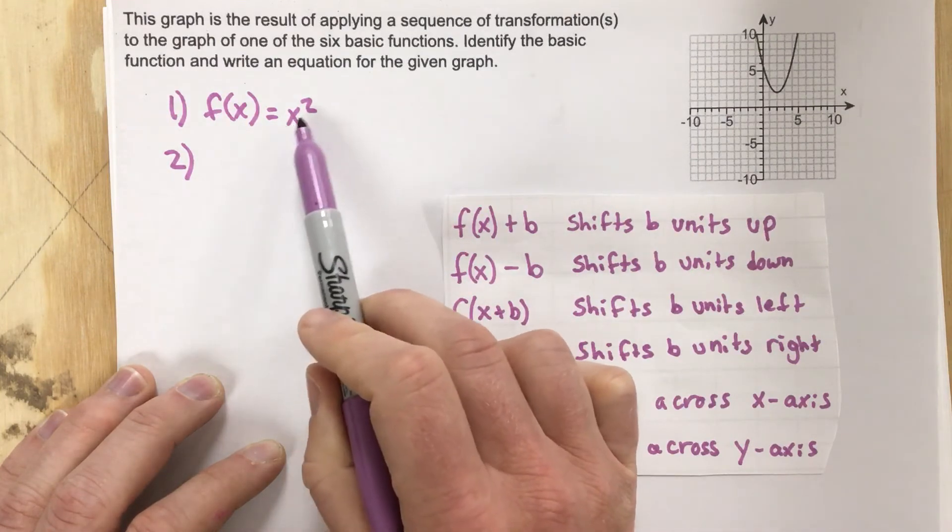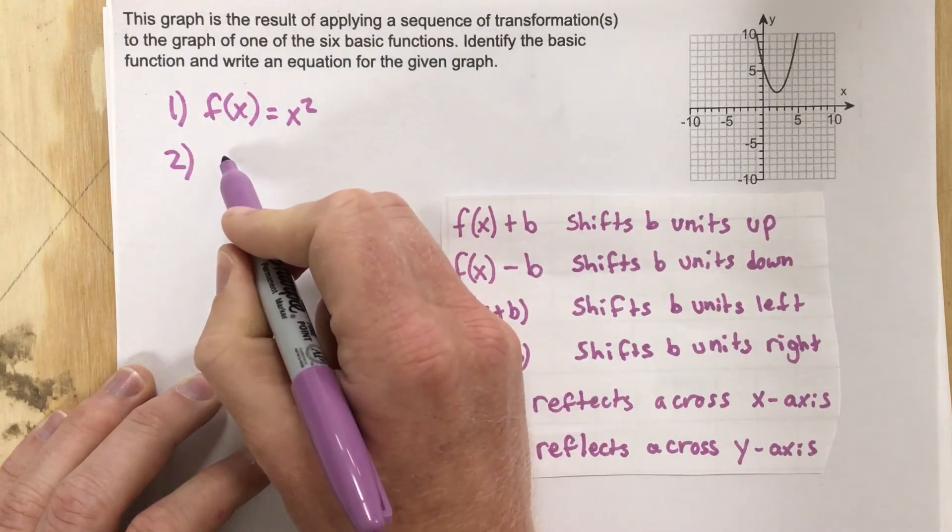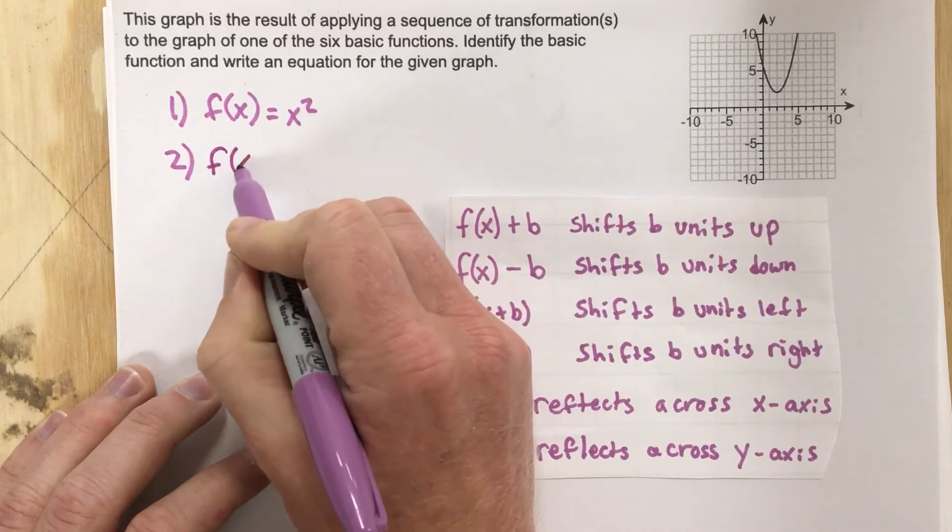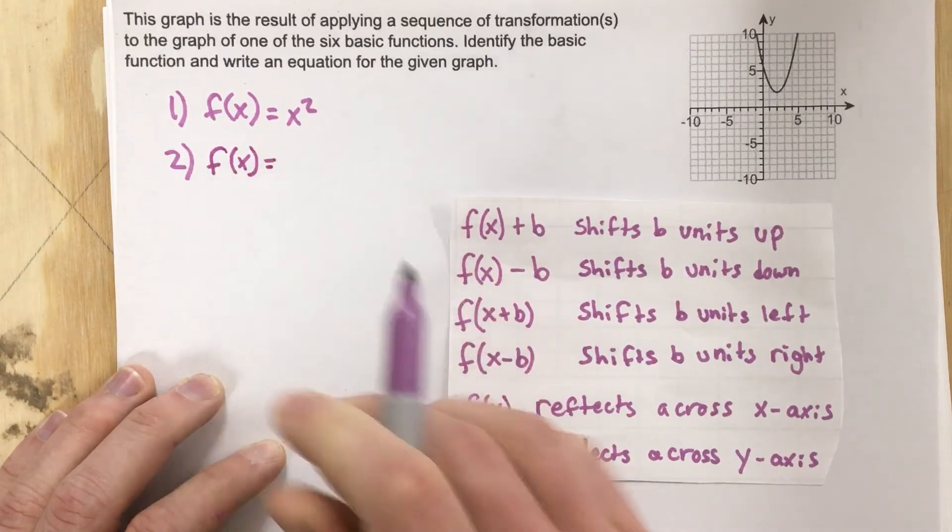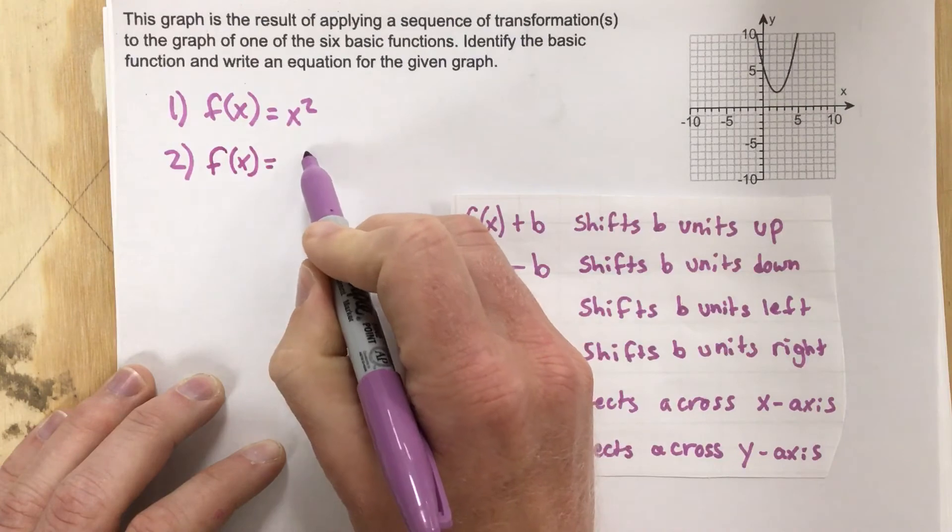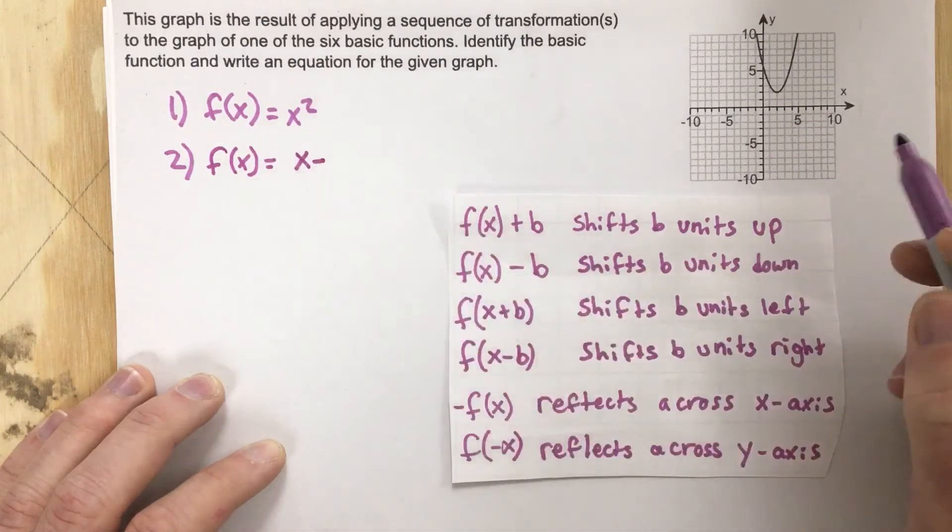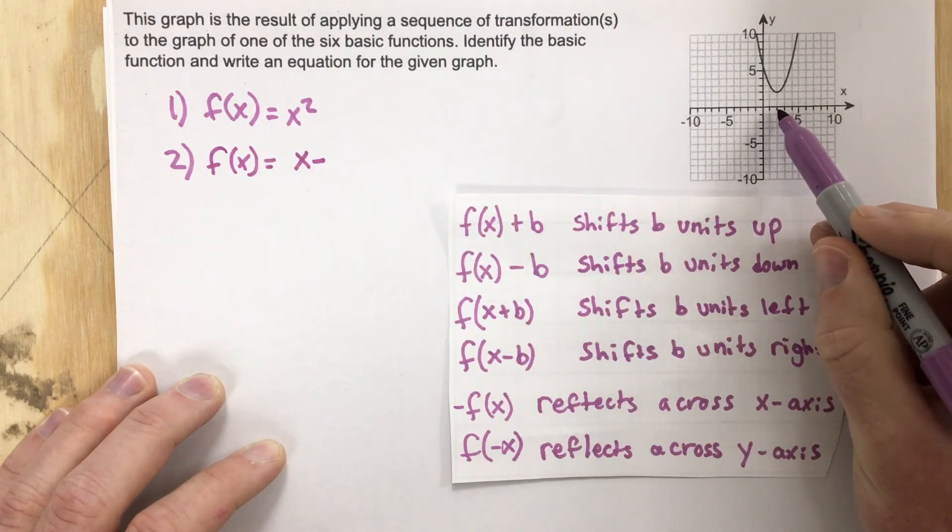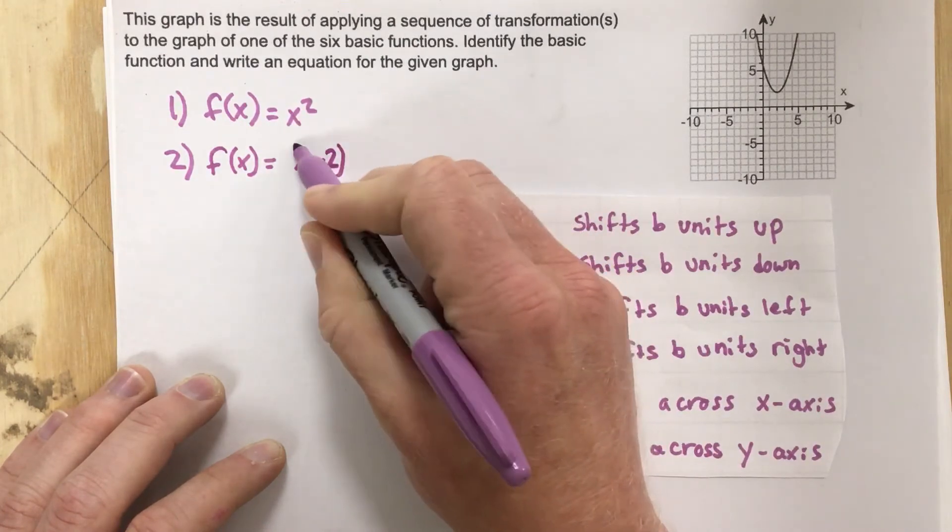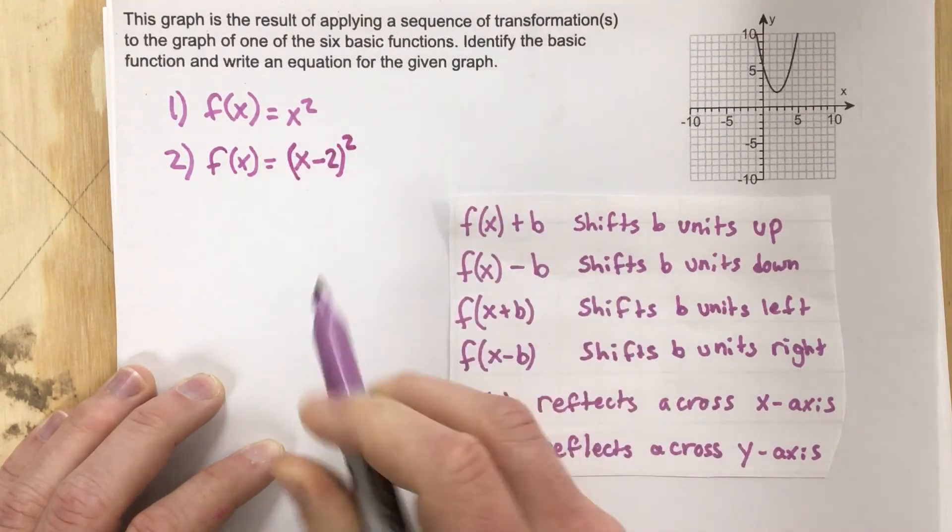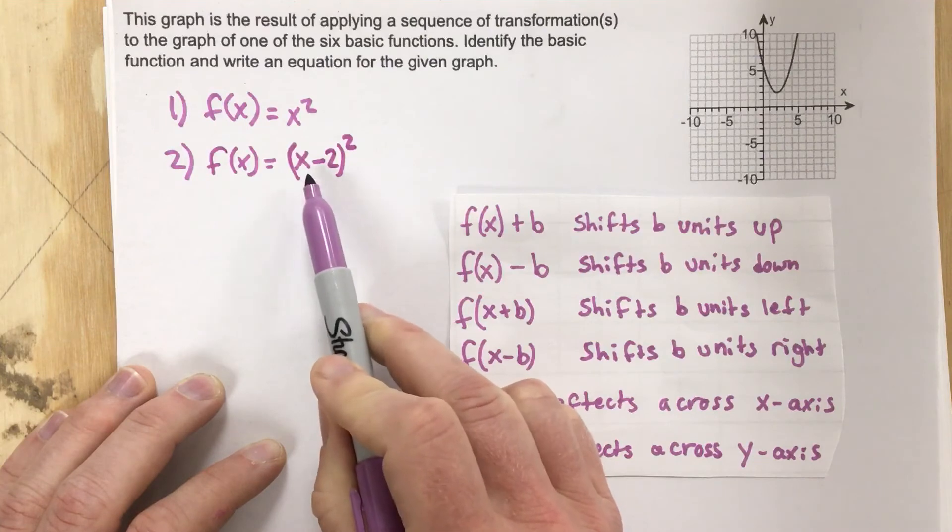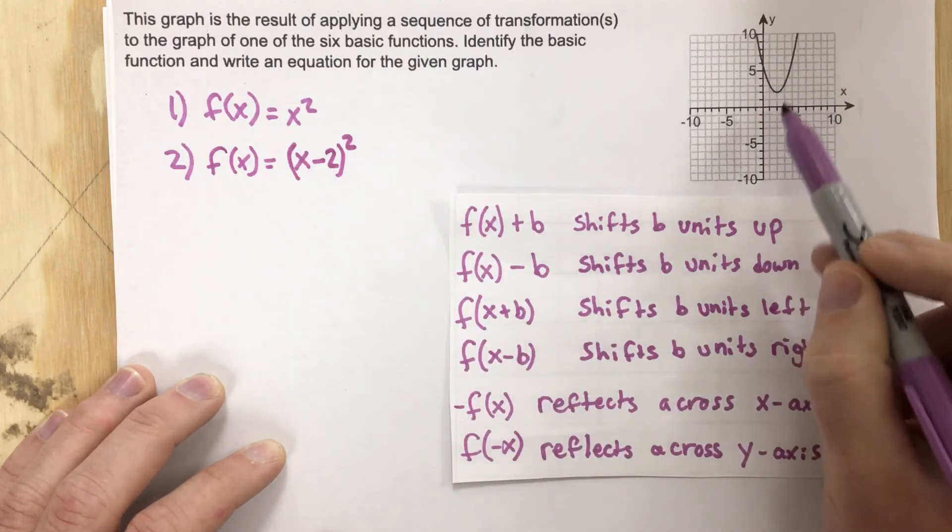So to shift this to the right we know we need to subtract from the x value. We're going to take the x squared part and subtract from the x values. We're going to say f of x equals x minus how many units to the right. That's one, two units to the right, so it's x minus two and then we'll put a square around it. So this is the shift of this function two to the right.